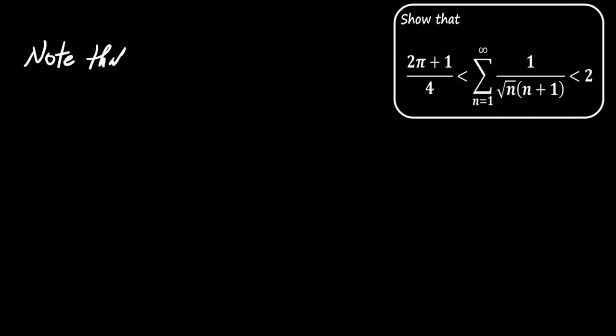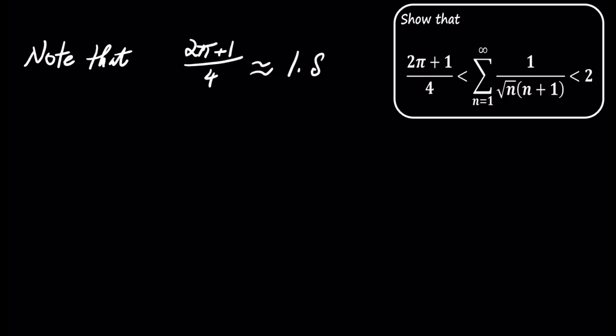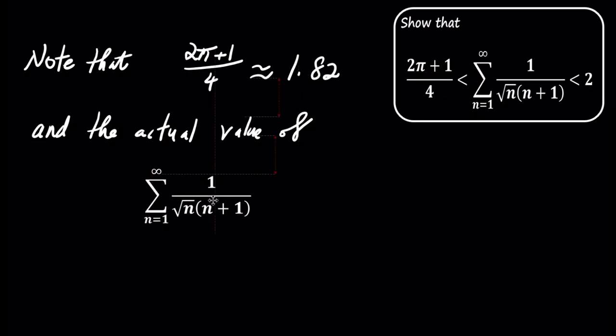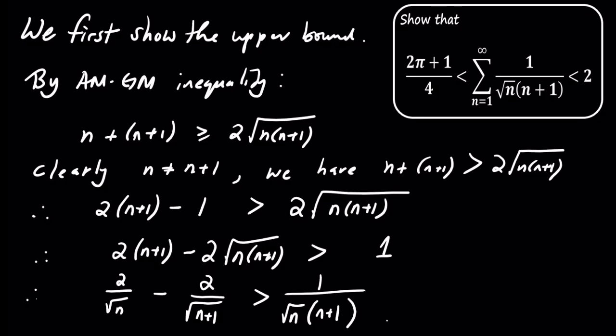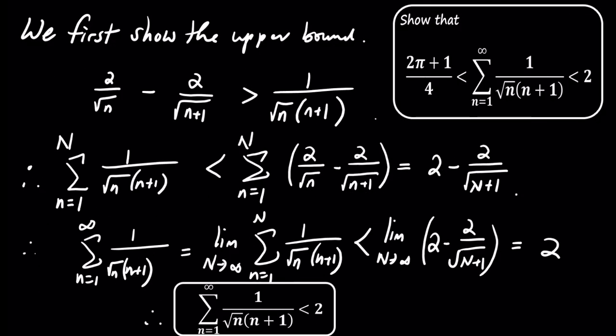Now, let's take a closer look at these bounds. The expression 2 pi plus 1 divided by 4 is approximately 1.82. On the other hand, the actual value of the infinite sum we are working with, which is the sum from n equals 1 to infinity of 1 over the square root of n times n plus 1, is approximately 1.86 as calculated using Wolfram Alpha. We've successfully shown that the infinite sum is bounded between 2 pi plus 1 divided by 4 and 2, with the actual sum being close to 1.86.